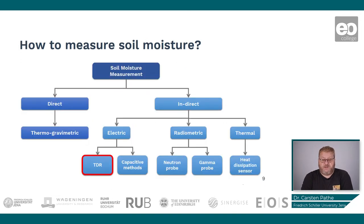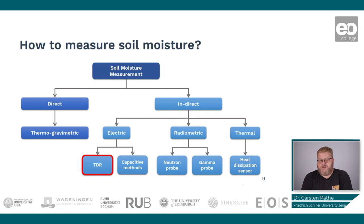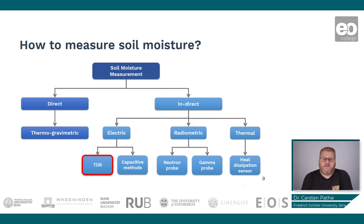How can we measure soil moisture? There are many ways of measuring soil moisture. You can directly measure soil moisture in the field by taking soil samples, or you can do indirect measurements by measuring a specific variable which allows conclusions on the moisture content in the soil. One of these methods we want to show you today is the TDR principle.